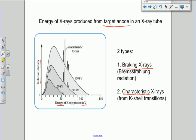You can see there's this typical continuous distribution of X-rays, which depends on the height and the spread of which depends on the accelerating voltage.